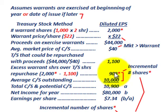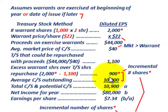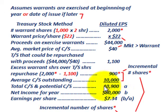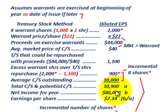We have 900 incremental shares — the excess of warrant shares over treasury stock shares. Then we add the average common stock outstanding for the year of 10,000 shares. Adding those together gives us total common stock outstanding plus potential common stock based on those warrants: 10,900 shares. We take our net income of $80,000, divide by 10,900 shares, and we get diluted earnings per share of $7.34.